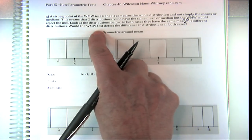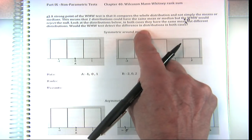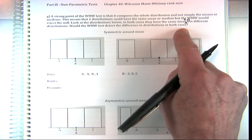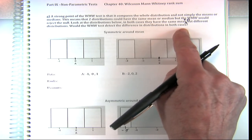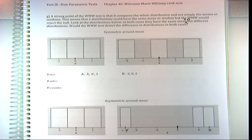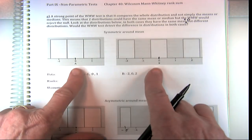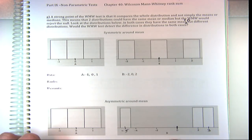Would the Wilcoxon-Mann-Whitney test detect the difference in distributions in both cases? When we use the Z or T test, it just detects the difference in means — we're not trying to detect differences in distributions. So now we want to know: will it detect the difference in both cases? That's what we're going to explore.